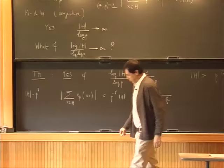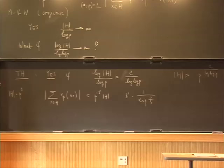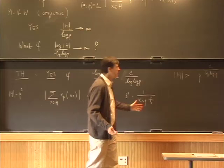So problem one: try to improve on this. This result comes from arithmetic combinatorics — it comes from a much more general thing which I will tell you in a moment. That seems to be the limit of these methods, and any kind of improvement beyond that will really require a new idea which will be a real breakthrough.